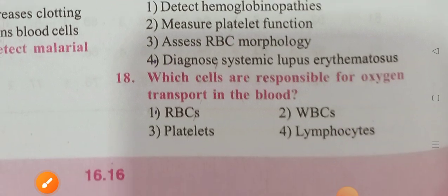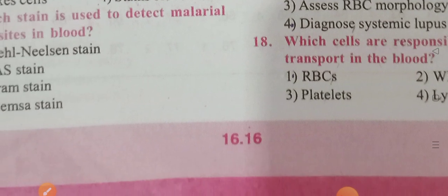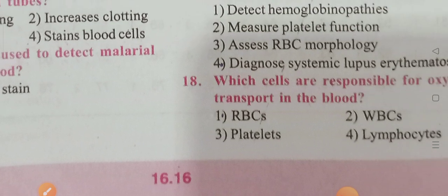Which cells are responsible for transporting oxygen in blood? Options: RBCs, WBCs, platelets, lymphocytes. Option 1 is the correct answer — RBCs are mainly responsible for transporting oxygen in blood.